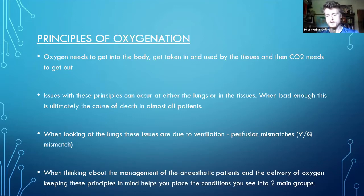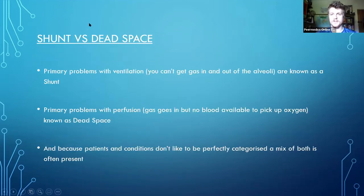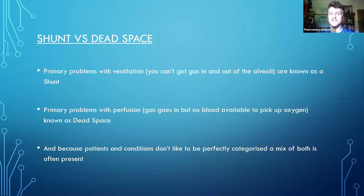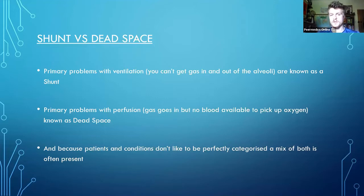When you have a perfusion problem and when you have a ventilation problem, you get put into a category, and those two main groups are shunt or dead space. If you have a problem with ventilation - you can't get gas in and out of your alveoli but your cardiovascular system is working fine - these are known as shunts. Problems with perfusion: your gas is going in and out of your alveoli but you've got no blood to pick up the oxygen - that's dead space. These two can coexist and one can lead to another in a positive feedback cycle.